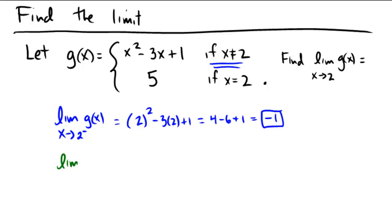How about from the right? The limit as we approach 2 from the right for g(x) would be—well, still we would follow this rule because we're not quite at 2, right? We're in a limit as we're approaching 2. So if we follow that top rule for numbers that are really close to 2, we get 2 squared minus 3 times 2 plus 1.